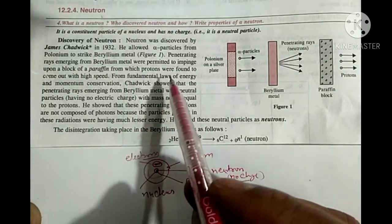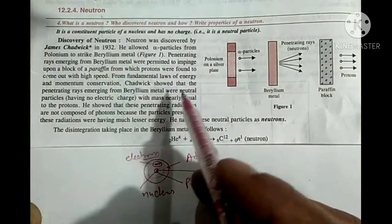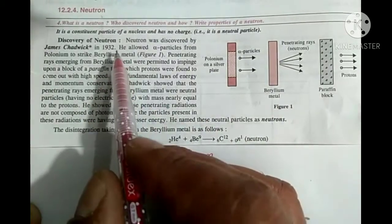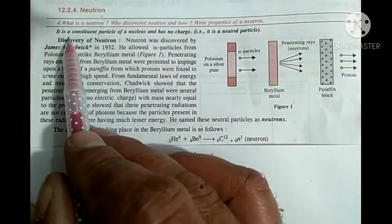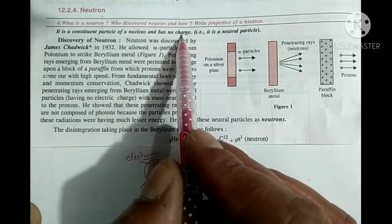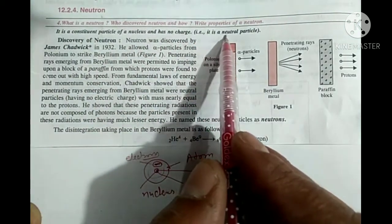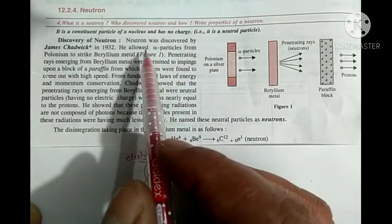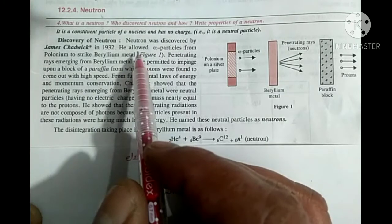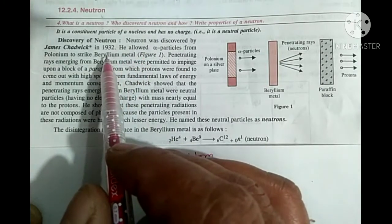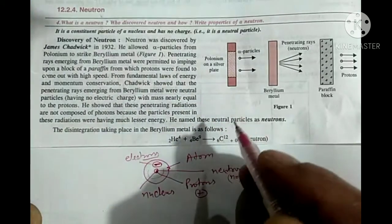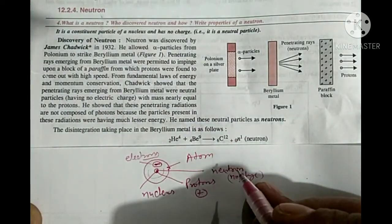We are going to study in this lecture how neutron was discovered. The neutron is a constituent particle of a nucleus and has no charge, that is, it is a neutral particle. And the credit of discovery of neutron is given to James Chadwick in the year 1932.